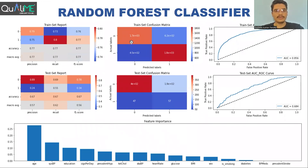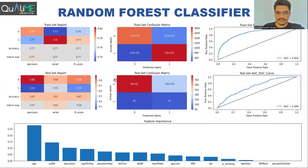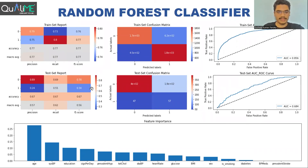Then we used an ensemble of decision trees — the Random Forest Classifier. We performed hyperparameter tuning to get the best set of hyperparameters, including max depth of 8. On the test set for class one, we got precision 0.24, recall 0.55, and F1 score 0.34. The most important feature according to random forest is age again, followed by systolic BP.